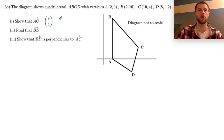For problem 3a we're given a diagram with this quadrilateral and it's labeled ABCD and we have all these vertices: A is given as (2,0), B is (2,10), C is (10,4), and D is (8,-2).